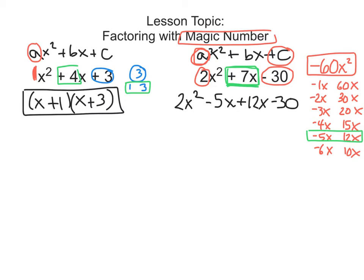So now what we do next is we put a vertical line to separate these four terms into two groups of two terms, and we're going to always put that right after the second term. So right here I'm going to put a vertical line in here. We want to make sure this plus sign stays on the right-hand side, and the first term minus the second term is on the left. Then plus the next term minus the next term. And now we are going to factor out the GCF of each side of that purple line separately.